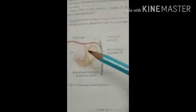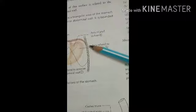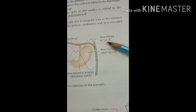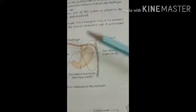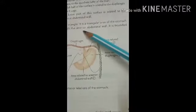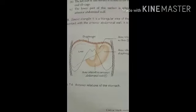Additionally, the anterior relations include the costal cartilage, which is separated from the stomach by the transverse abdomen. The diaphragm on the upper side separates the stomach from the left pleura and the pericardium. Specifically, the diaphragm separates the fundus of the stomach from the left pleura and the pericardium. These are the visceral relations of the stomach.